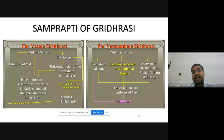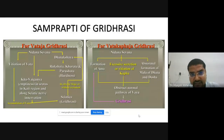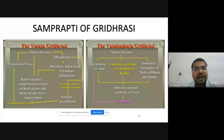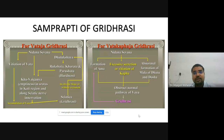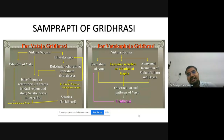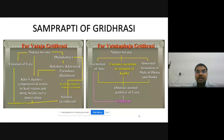The third type of Samprapti is Avarana Janya Samprapti — one should look for Rakta Vrta Vata or Kapha Vrta Vata and do Avarana Janya Chikitsa, followed by Vata Upakrama. The fourth type is Dhatukshaya Janya Samprapti, which can happen due to Abhighata. Based on Samprapti, Gridhrasi can be of four types: Kevala Vata, Samsarga Dosha, Avarana Janya, or Dhatukshaya Janya.